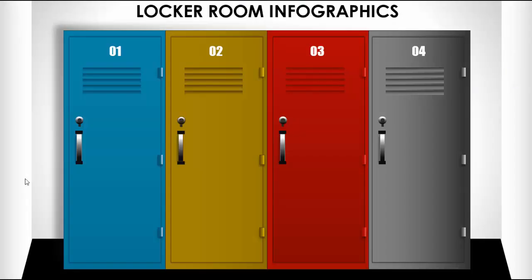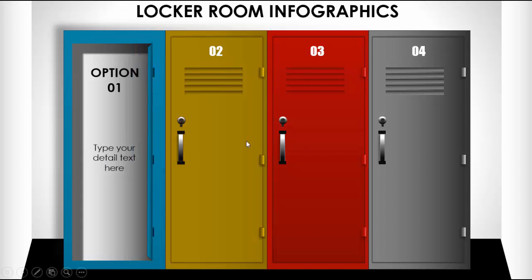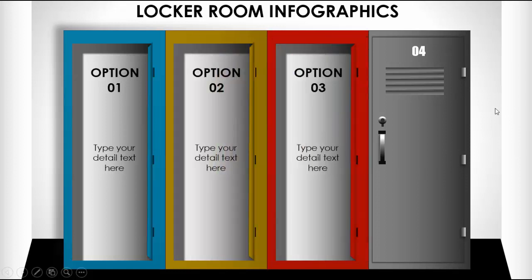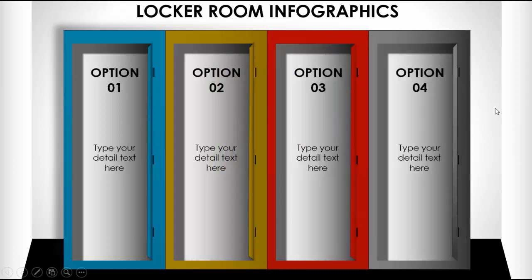In this tutorial I'm going to show you a very unique slide called locker room infographics. I have created four lockers of different colors, numbered on the top. I've created an exhaust grill along with the doorknob and the keyhole. When I click, the door will open and reveal the first option and detail text, then the second, third, and fourth locker doors will open.